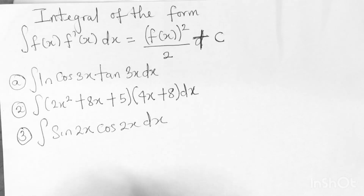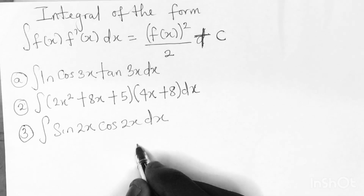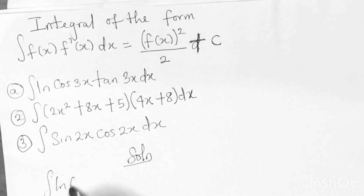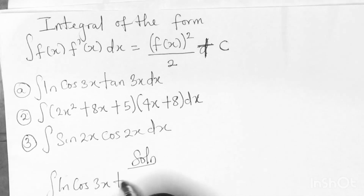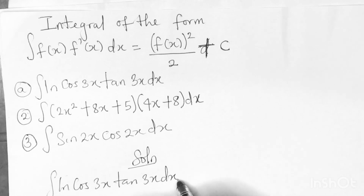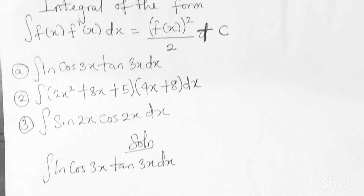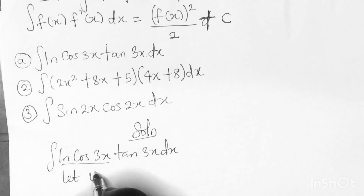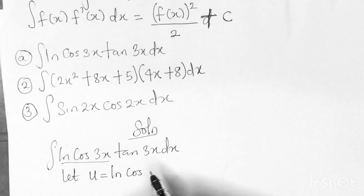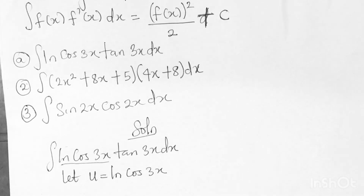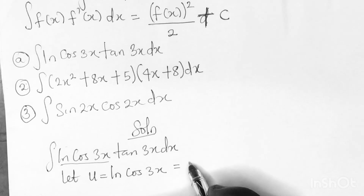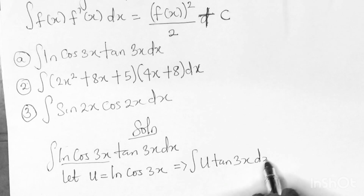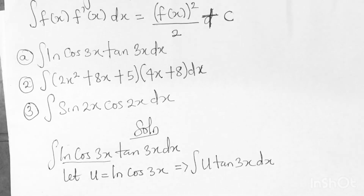The first example is the integral of ln(cos3x)·tan3x dx. The first thing we do is represent ln(cos3x) with a substitution u. Let u = ln(cos3x), so the equation becomes the integral of u·tan3x dx.